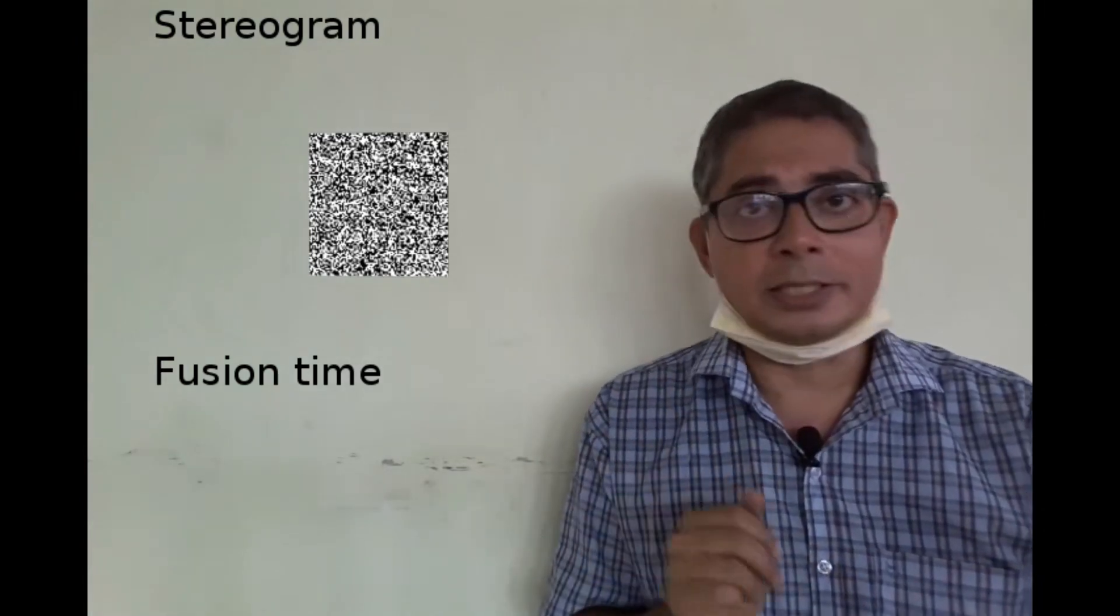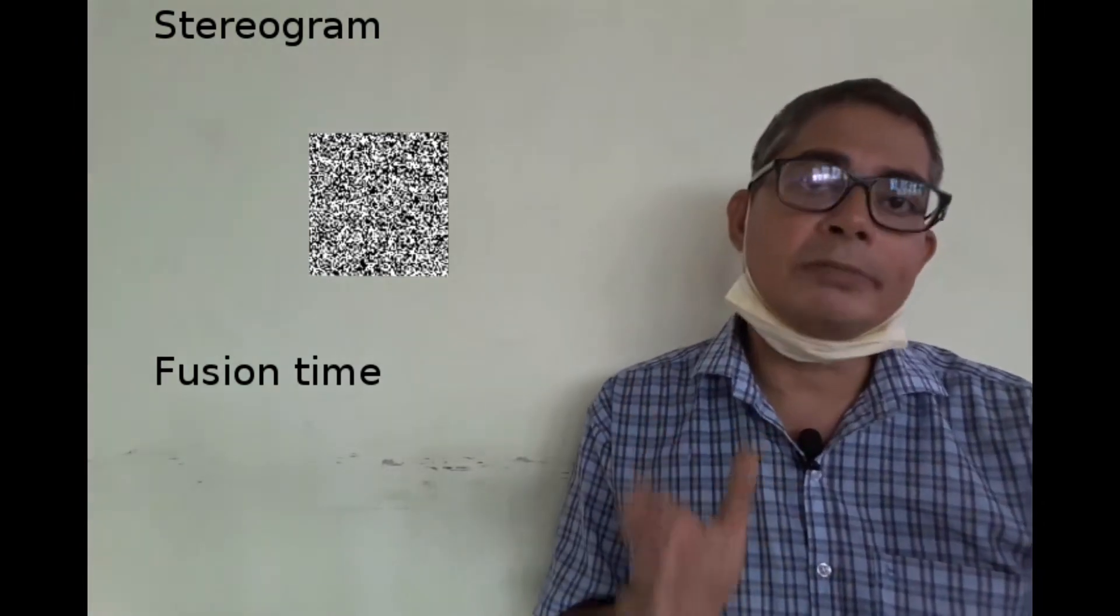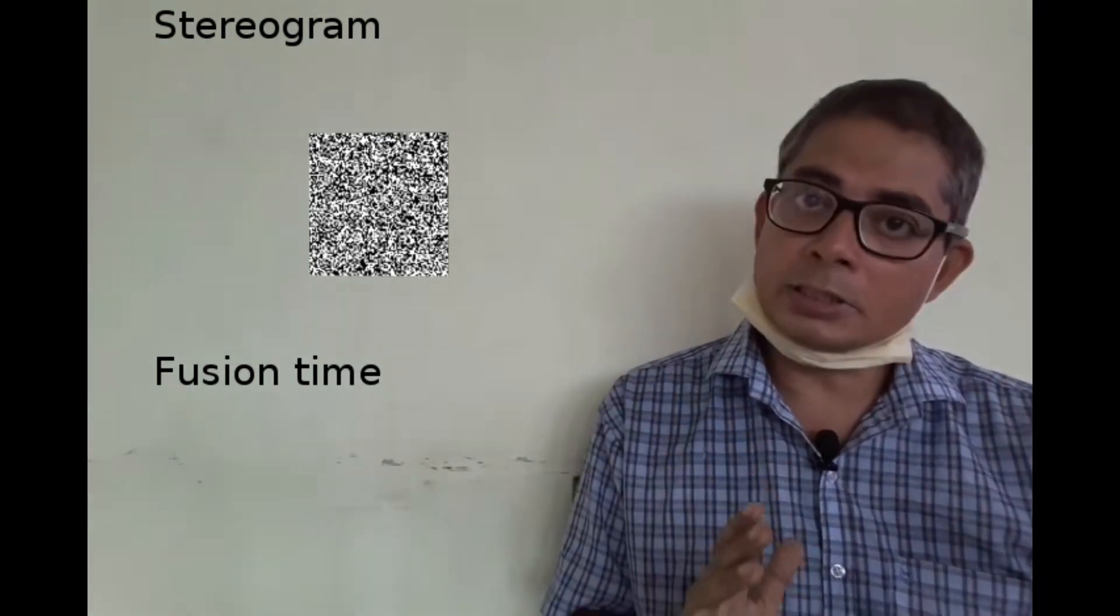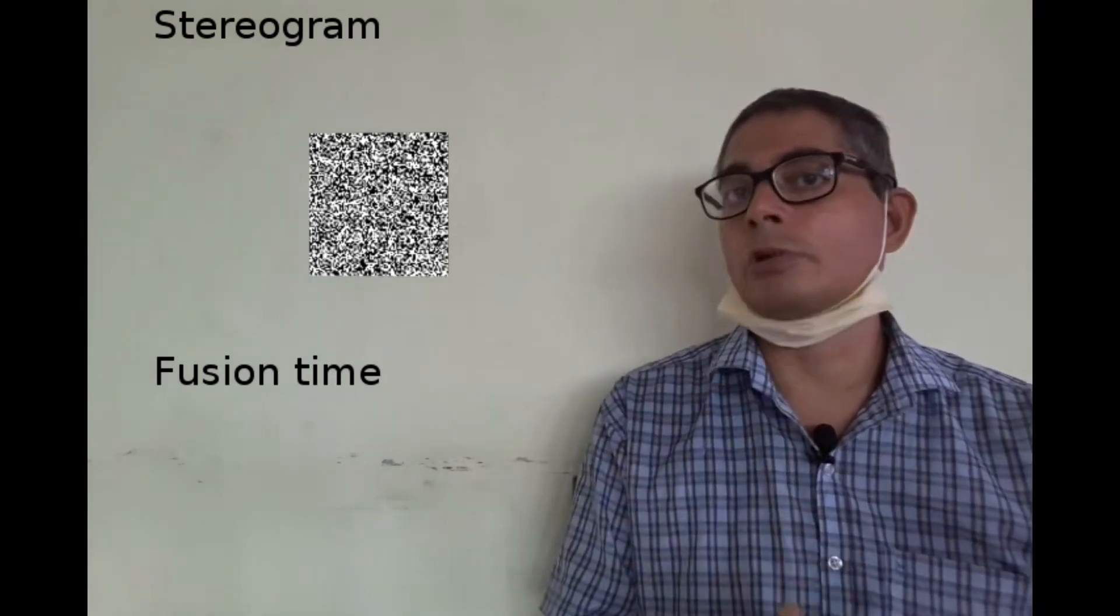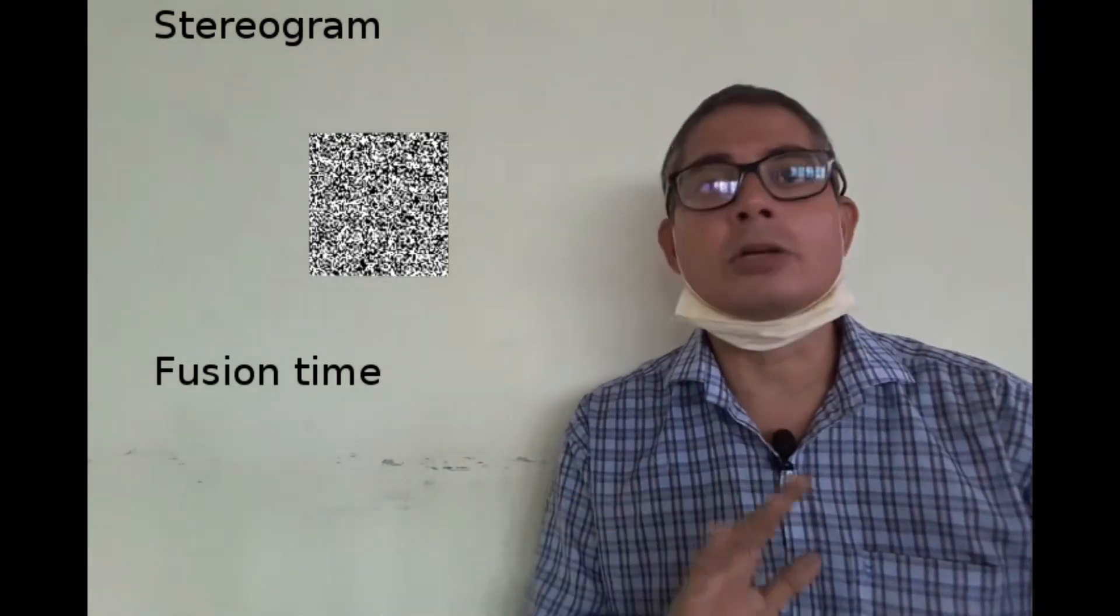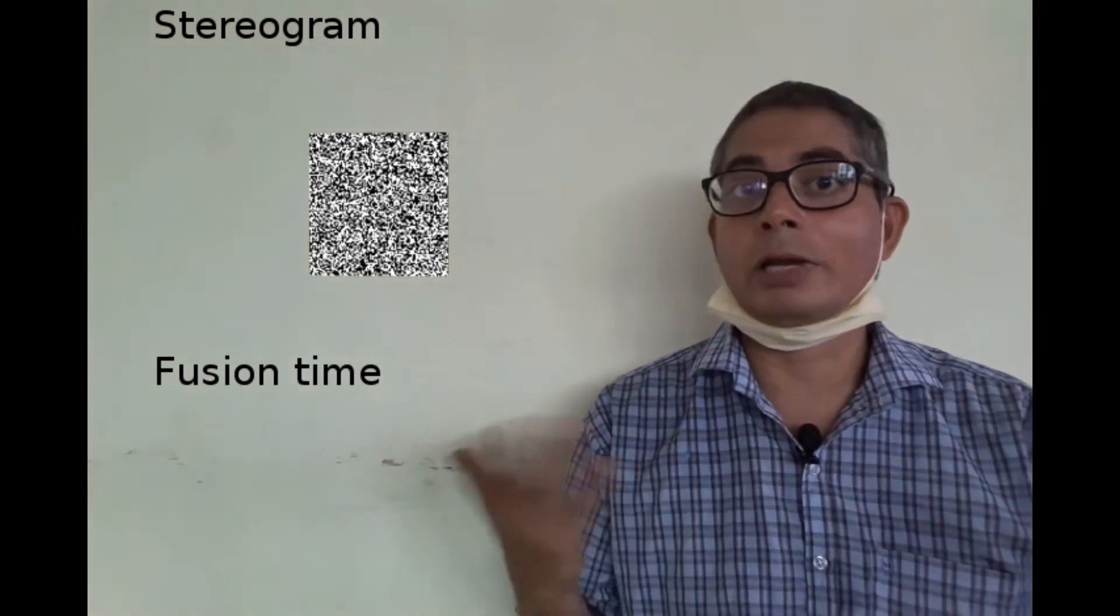To test this, two groups of individuals were each shown the same stereogram. The persons in the first group were told about the 3D object beforehand, while those in the second group had no idea about what they were going to see.